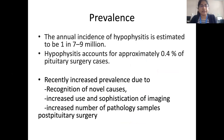The reported prevalence is estimated to be 1 in 7 to 9 million. But in recent years, it has increased due to recognition of novel causes, increased use and sophistication of imaging, and an increased number of pathological samples in post-pituitary surgery.